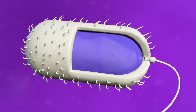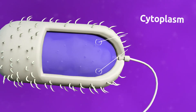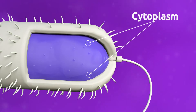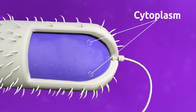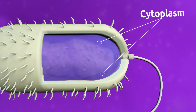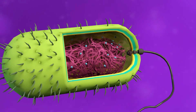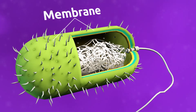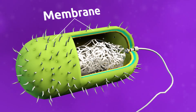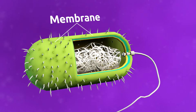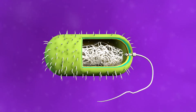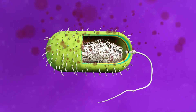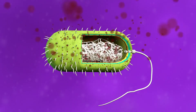The cytoplasm is a fluid solution found inside the membrane, and organelles are located in the cytoplasm. The membrane is a layer that surrounds the cell, structures and protects it from the outside environment. Membranes also allow food in and release waste substances.